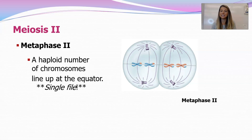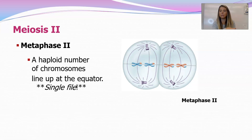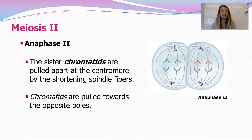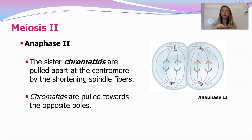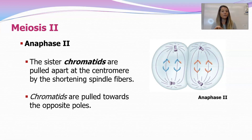In metaphase II of meiosis, just like mitosis, the chromosomes line up single file across the equator — that's different from metaphase I, where they lined up in pairs. In anaphase II, just like anaphase of mitosis, the chromosomes are yanked apart — the chromatids are being pulled at their centromere by those shortening spindle fibers toward the opposite poles. In anaphase I a whole chromosome was heading to the pole, but in anaphase II, just like mitosis, a chromatid is being pulled to the pole.